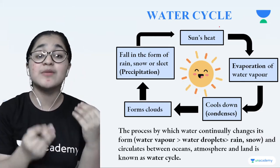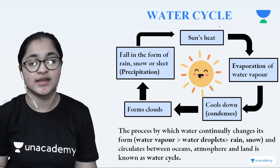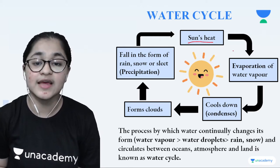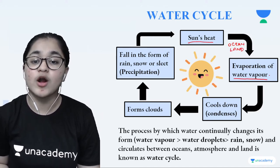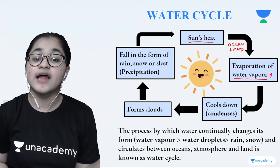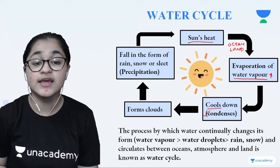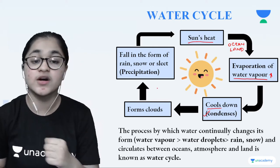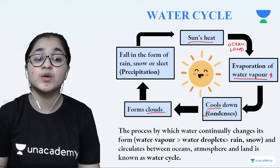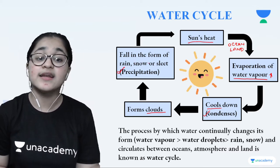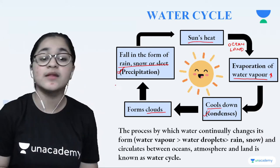Let's revise the water cycle as a flow chart. Sun's heat falls on earth → water on ocean and land starts evaporating as water vapors → water vapors rise and after some distance start cooling down (condensation) → condensed water vapors turn into water droplets → water droplets form a cloud → when cloud becomes too heavy it bursts and water droplets come back to earth as rain or snow (precipitation) → this entire cycle keeps revolving — we call it the water cycle.